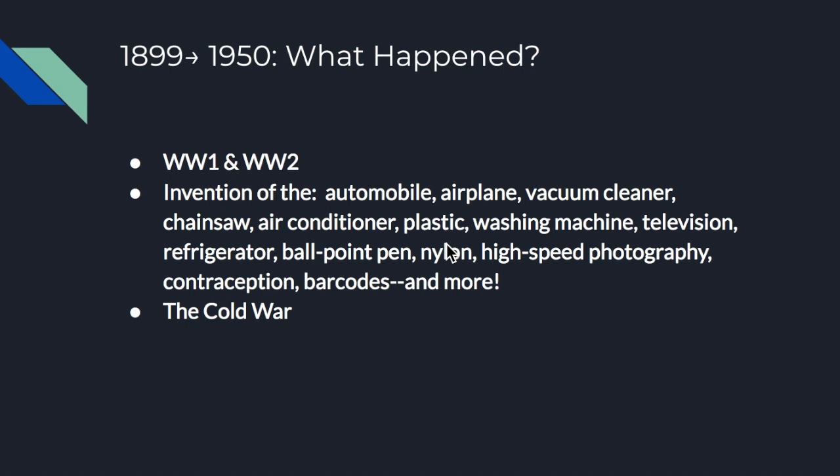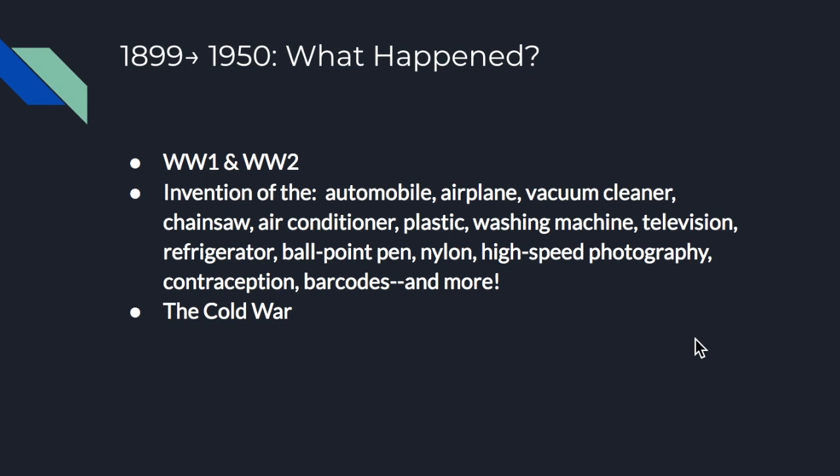We also see the invention of plastic, and the significance of this is hard to overstate. I would ask you to take a look around you and just note how many things are made of plastic. Around me I see a cup, a pen, a pair of glasses, and an air conditioner — all made from plastic. Before the 20th century it did not exist, so everything had to be made from natural fibers. This 50-year period also saw the invention of the washing machine, the television, the refrigerator, the ballpoint pen, nylon, high-speed photography, contraception, and barcodes — and so much more. Really in this period between 1900 and 1950, the world becomes a modern place.